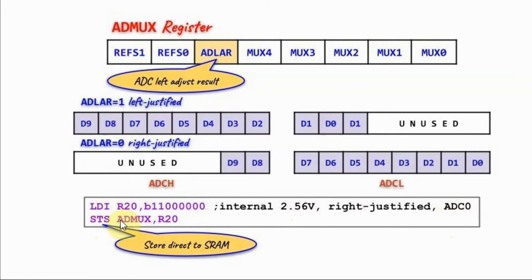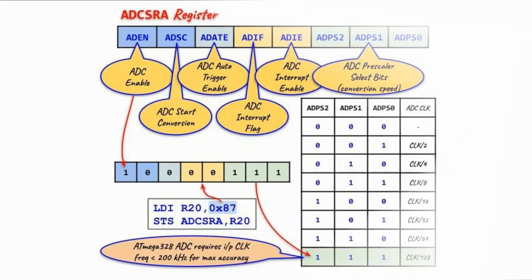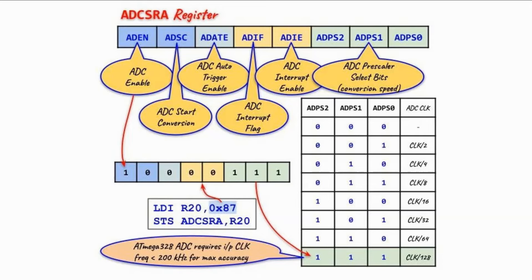To access ADMUX and other ATD converter special function registers, we need to use the STS instruction, which stands for store direct to SRAM. The reason is that all special function registers related to the ATD converter are memory-mapped within the static RAM portion of memory.